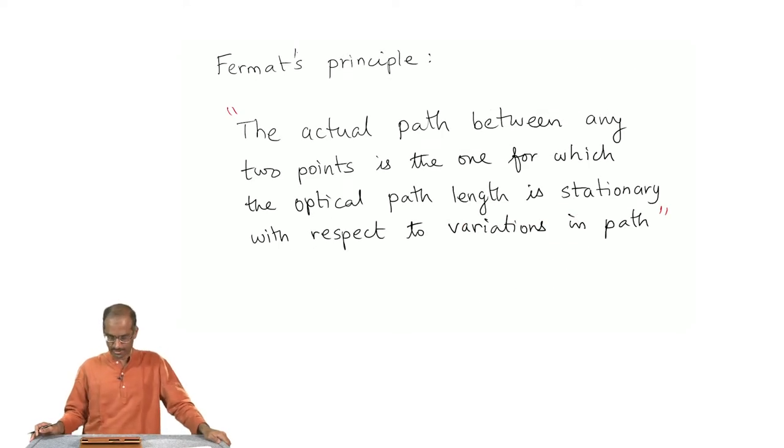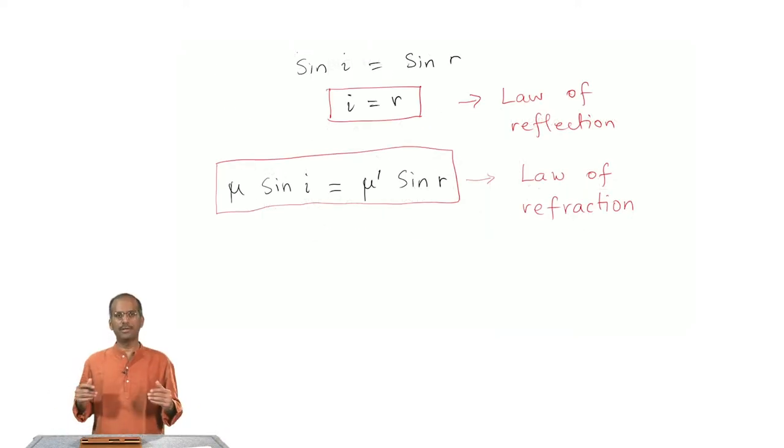Fermat's principle can be stated as the actual path between any two points is the one for which the optical path is stationary with respect to variations in the path. Today we will apply Fermat's principle to a little more complicated system, mainly to the case of a thin lens.